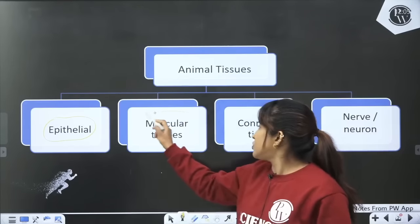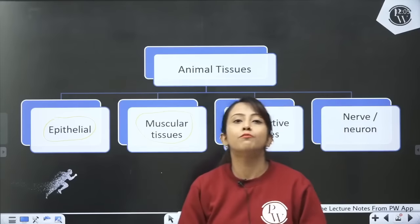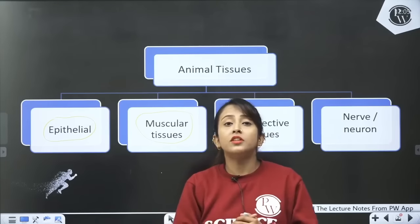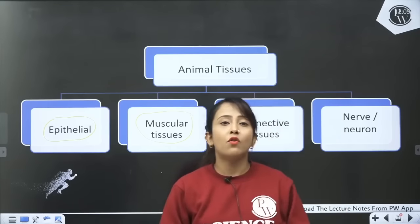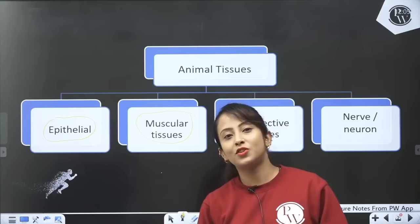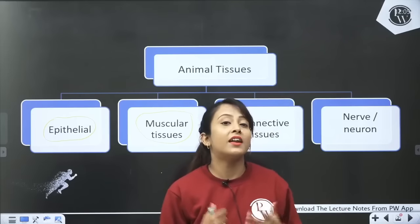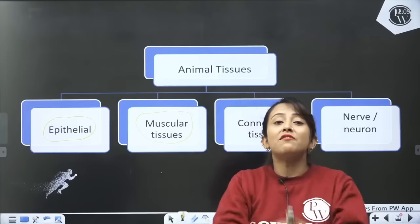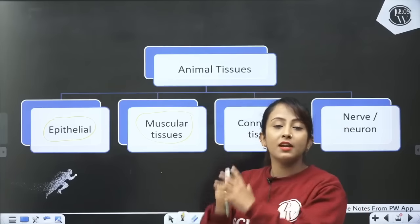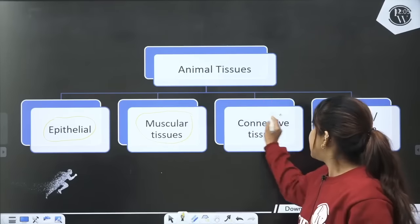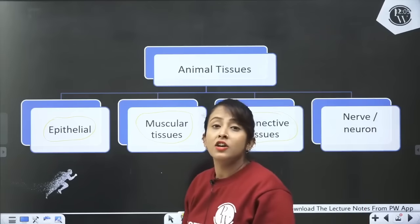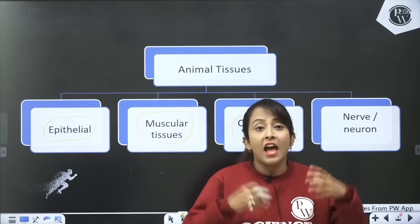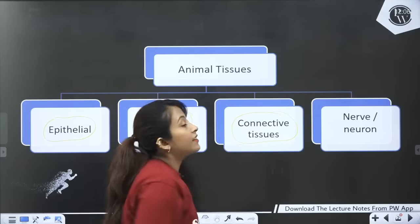Similarly, there are some tissues which help in movement — whether it is our voluntary movements, that means movements which are in our control, or whether it is our involuntary movements. Muscular tissues help in movement of the body. And then there are some tissues called connective tissues.